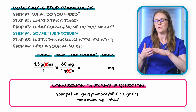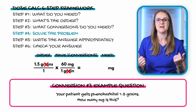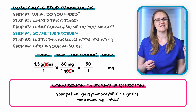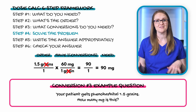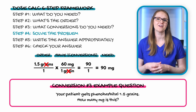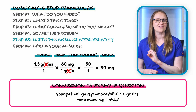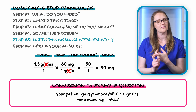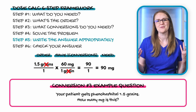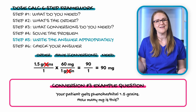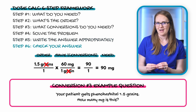Step four: multiply across the top, multiply across the bottom, and divide. 1.5 × 60 = 90; 1 × 1 = 1; 90 ÷ 1 = 90. Step five: the answer is 90 milligrams — a whole number, so no rounding rules or decimals to move. Step six: double-check the math and make sure all units cancel out correctly.